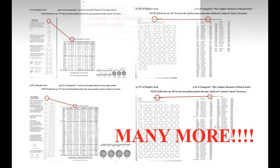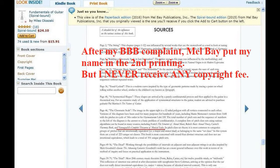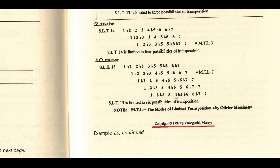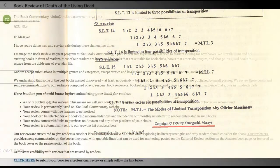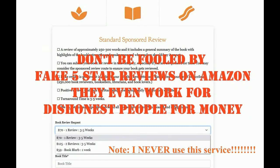In the first printing, there was no credit for me. After my Better Business Bureau complaint, Mel Bay put my name in the second printing, but I never received any copyright fee. If you take a look at my academic paper, you can easily find the copyright notice — 1999. Mel Bay never paid me any copyright fee, and the author possesses a Japanese family name, but I clearly say Okazaki was not my student. Don't be fooled by fake five-star reviews on Amazon. I received this kind of mail — it's from a book commentary service only for money. It's fake.